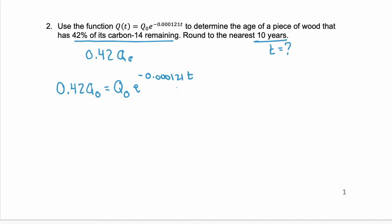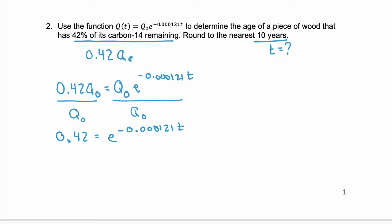We want to isolate that exponent, so let's divide both sides by q₀. We have 0.42 equals e to our exponent with variable t. Now we're going to take the natural log of both sides, because doing that will get rid of the base e and leave us with just the exponent. The left-hand side is the natural log of 0.42, and the right-hand side is the exponent: negative 0.000121·t.